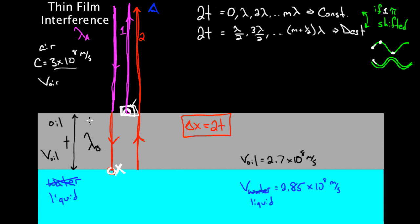It's going to be different from the wavelength in this first material if the speed is different. It could even have a different wavelength in the water, but we don't worry about the wave traveling down there. Some of the light will pass through, but it's not necessarily going to get back to my eye, so I'm not going to worry about that part.